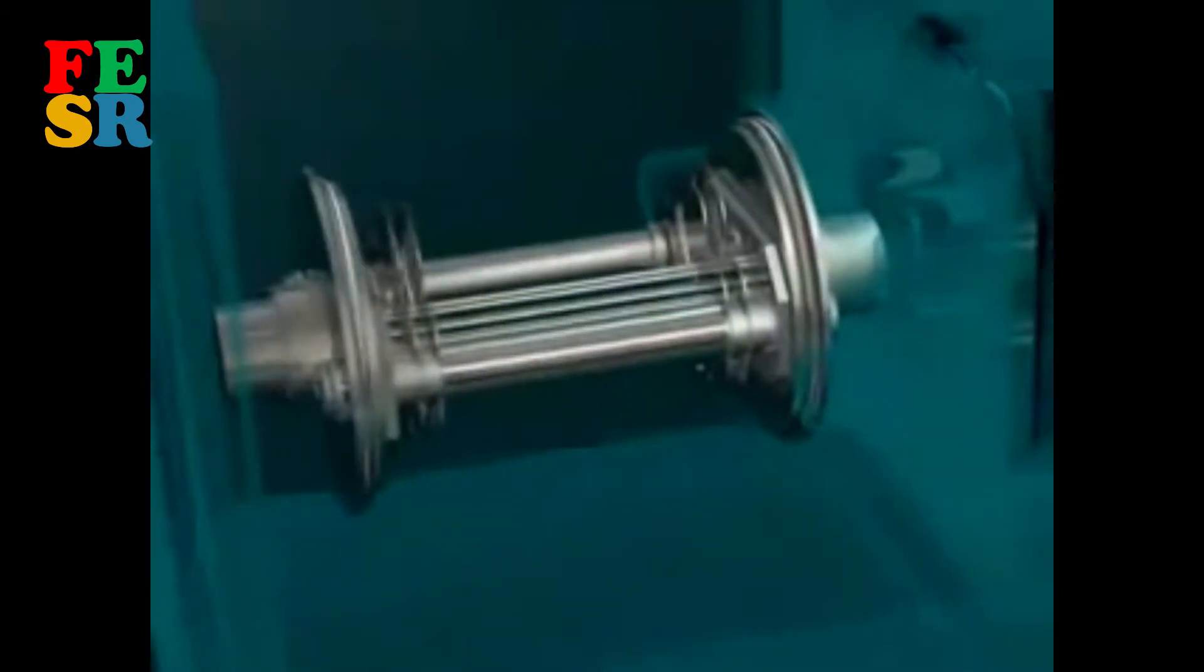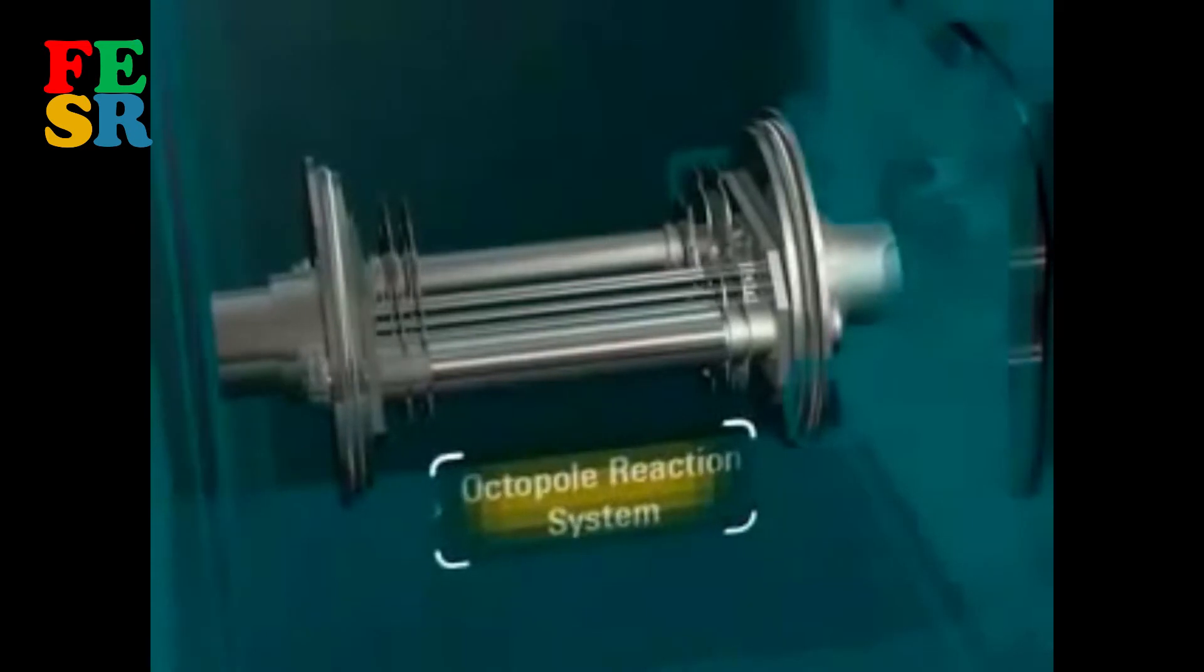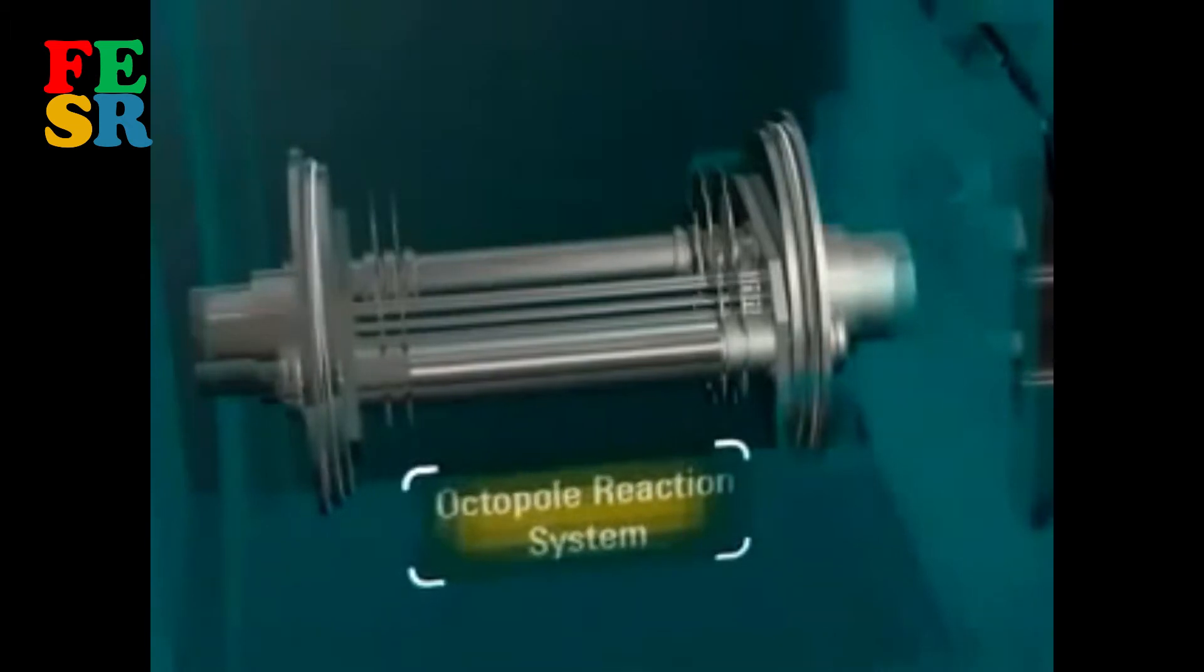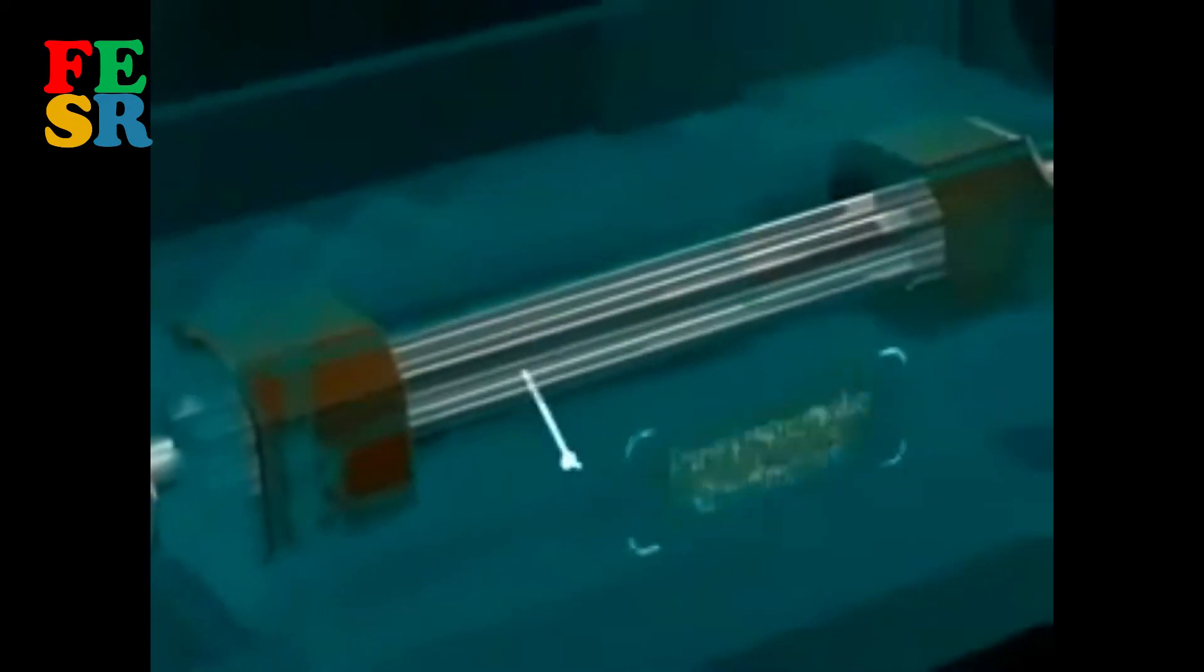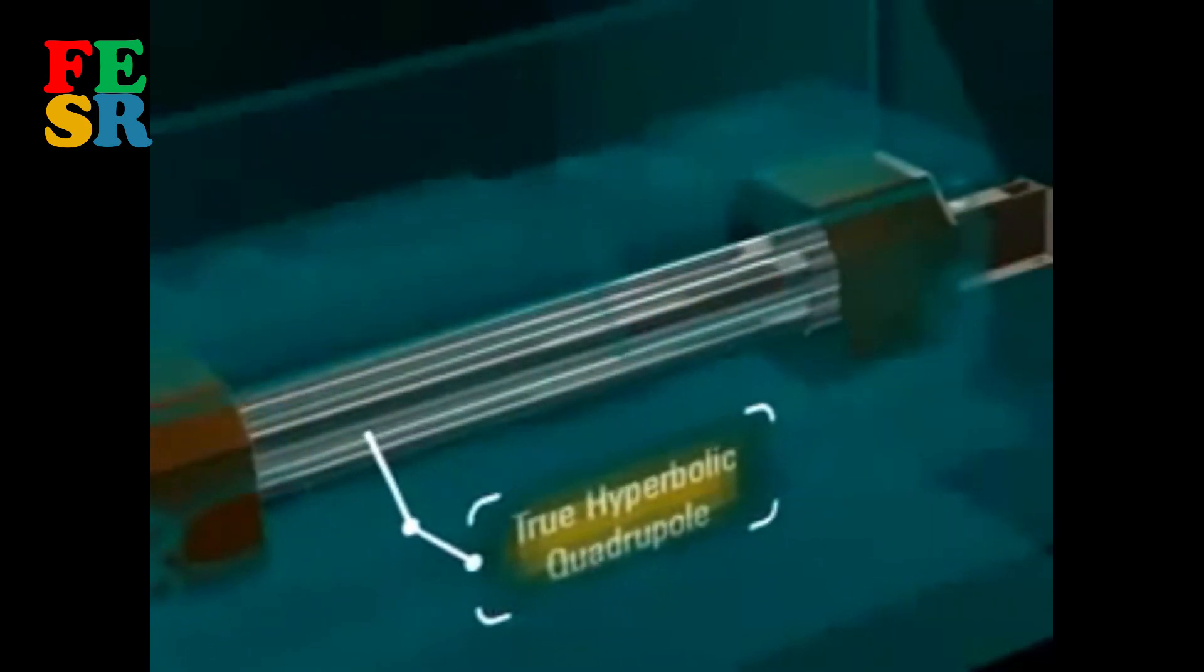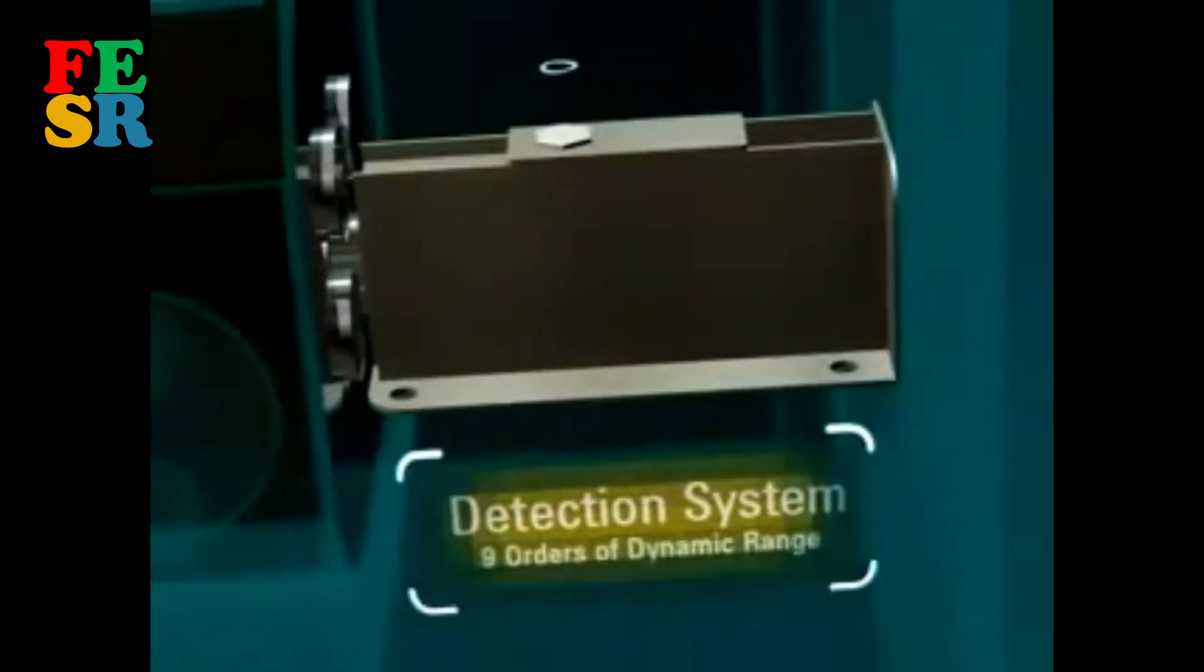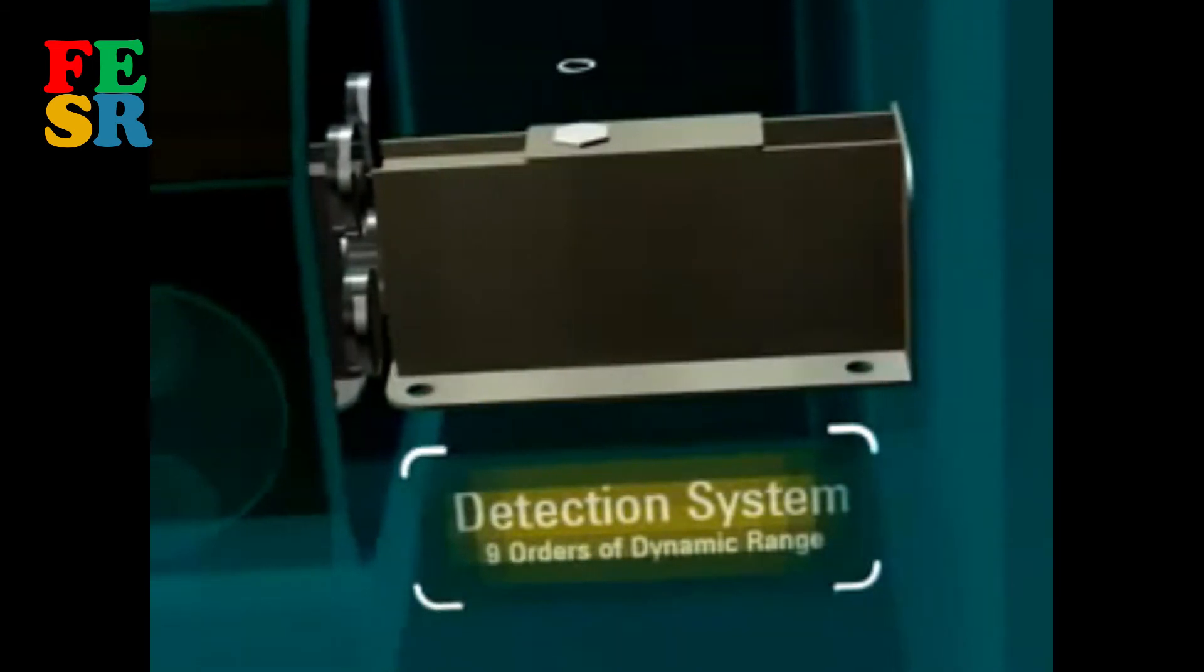The Octopole Reaction System is comprised of an octopole ion guide inside a pressurized reaction cell, and can be operated in both collision and reaction modes for the removal of polyatomic spectral interferences. Mass filtering is performed by a high-frequency quadrupole with unique true hyperbolic cross-sectional rods for superior abundance, sensitivity, and peak separation. The advanced detection system provides nine orders of linear dynamic range, from parts per trillion to hundreds of parts per million.